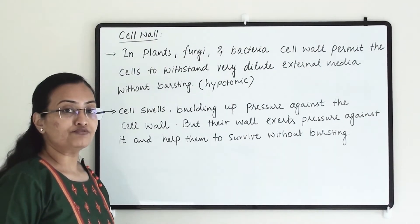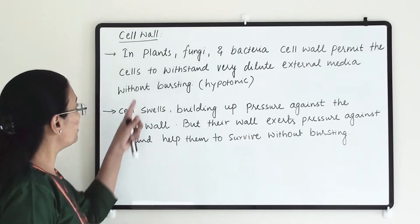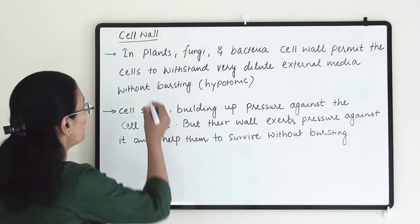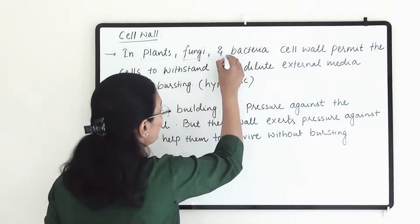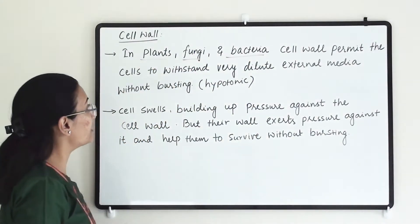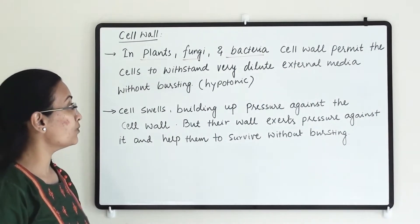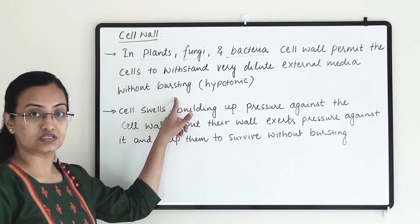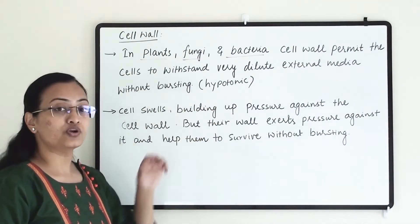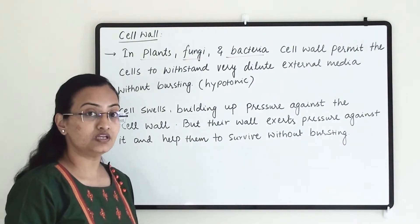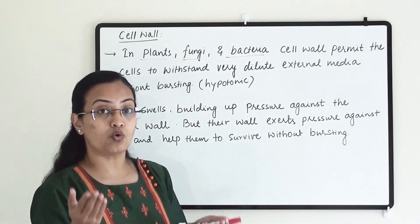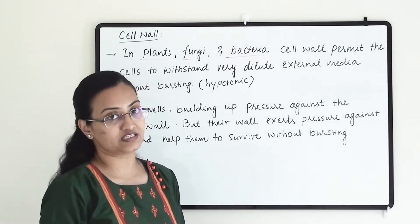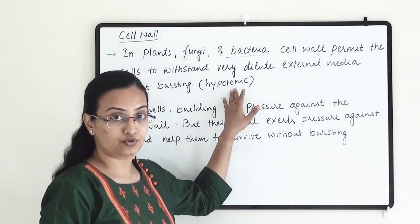One important feature of the cell wall is that in plants, fungi, and bacteria, the cell wall permits the cell to withstand very dilute external media without bursting. So when a hypotonic solution is present — meaning water movement is from outside to inside — the cell is at risk of swelling.